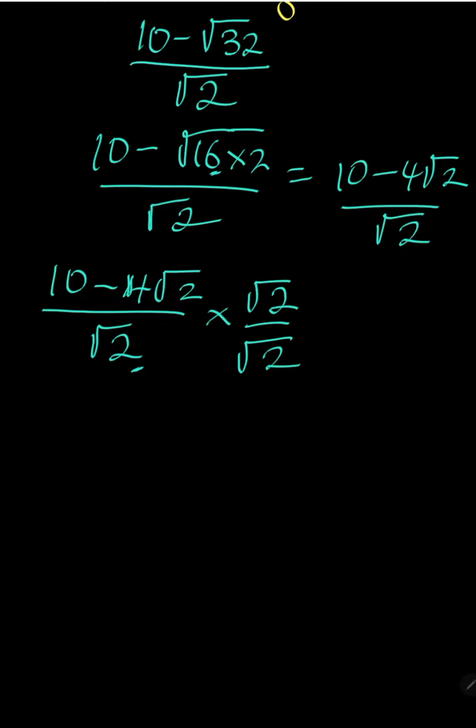So now, we do the multiplication. We have √2 times 10, we have 10√2. √2 also times minus 4√2 will give us minus 4 bracket 2. Why? √2 times √2 is square root of 4 and square root of 4 is this 2 here.